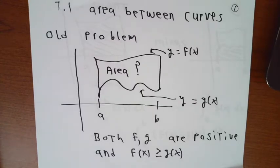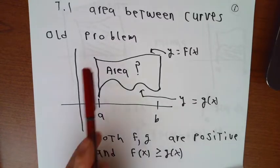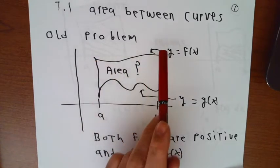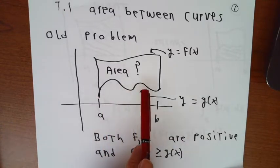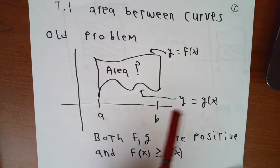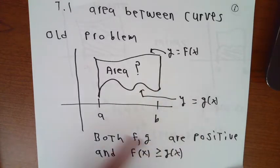It's an old problem that we already know the solution of in certain circumstances from Calculus 1. We have a function y equals f of x, which we presume to be positive, at least for the x values between a and b. We have another function, y equals g of x, whose function values are also positive, and the values for g of x are below those of f of x. In this situation, we want to calculate the area between the two curves, starting at x equals a, ending at x equals b.